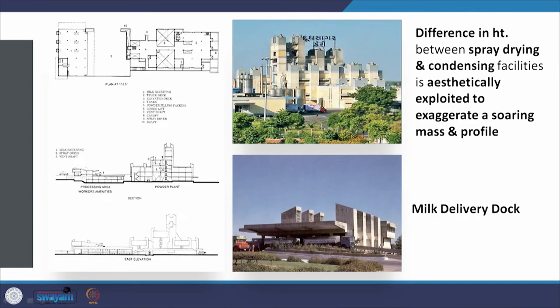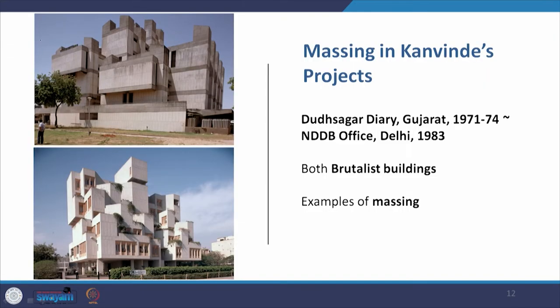The difference in height between the spray drying and condensing facilities has been aesthetically exploited by Kanwinde by providing these shafts that rise up, creating a variation in heights that forms this interesting massing of the building. This is the milk delivery dock. The massing you find in the Dootsagar Dairy project from 1971 to 1974 is echoed in the NDDB office building in Delhi from 1983 — both brutalist buildings and both examples of powerful massing.